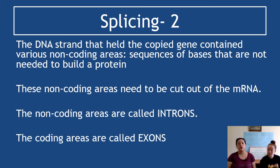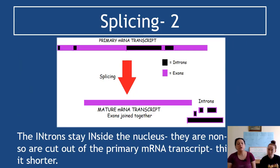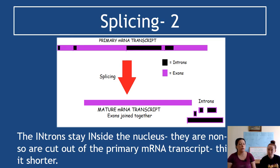The non-coding areas — the useless bits — are called introns. The coding areas, the useful stuff on the mRNA strand, are called exons. We want to remove the introns and chain all the exons together, then send them to the ribosome. A diagram shows splicing: at the top is the primary mRNA transcript made up of both introns and exons; after splicing, the mature mRNA transcript contains only exons joined together, with the introns left behind.